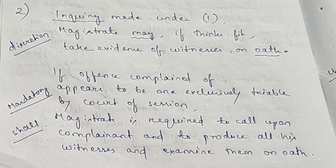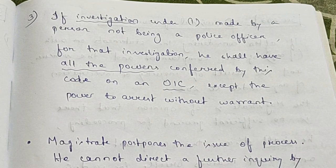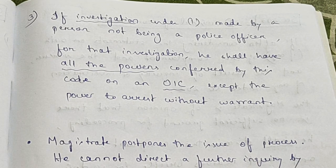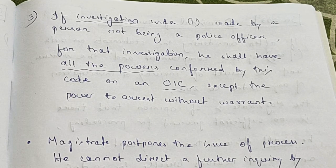The dismissal of the complaint due to the absence of the complainant in such a situation is merely illegal. Subsection 3 says: if investigation under subsection 1 is made by a person not being a police officer, such person shall have all the powers conferred by this code on an officer in charge of a police station, except the power to arrest without warrant.